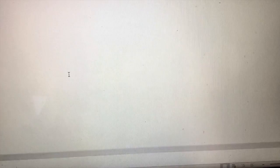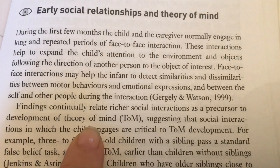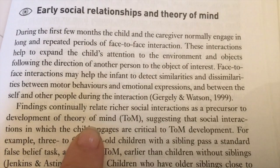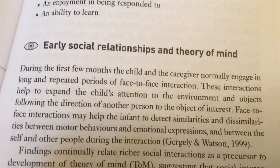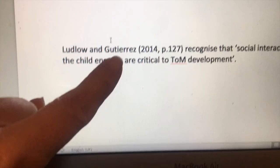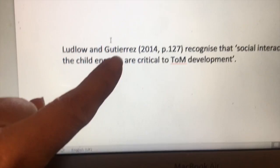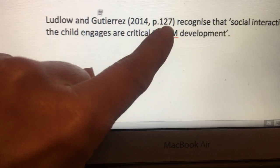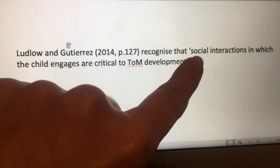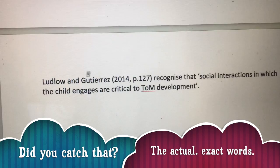Another thing I might want to do is actually use the exact words that Ludlow and Gutierrez have used. Looking at the text, they say 'social interactions in which the child engages are critical to theory of mind development.' I might think I can't put that any better, so I'll use those exact words. That's going to look like this: the author's surnames, then an opening bracket with the date, a comma, and then the page number those words came from, then the exact words inside inverted commas.